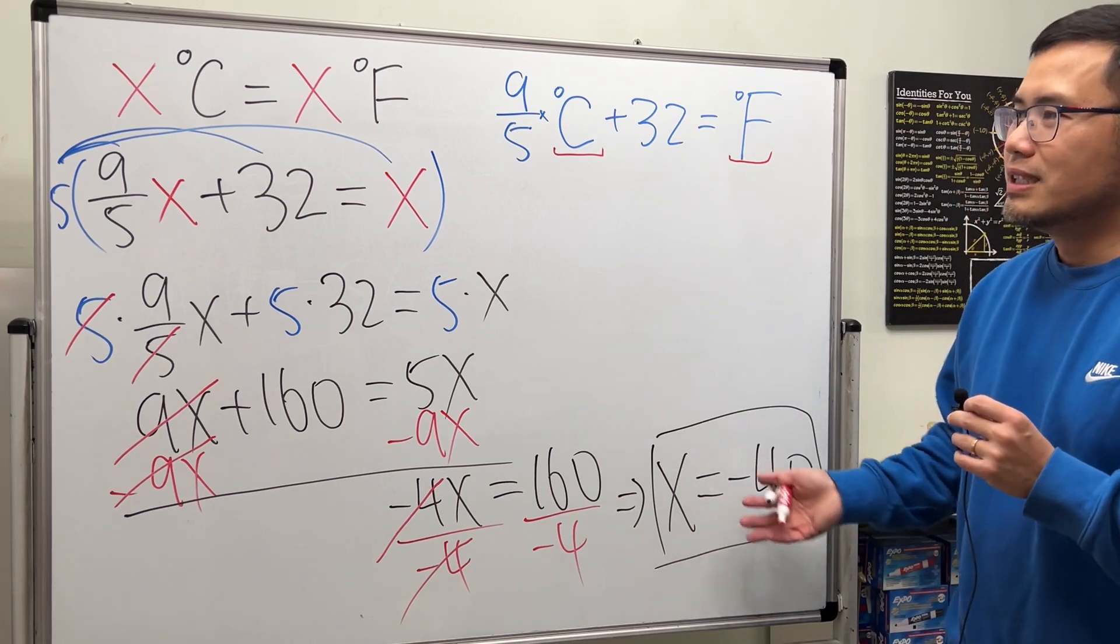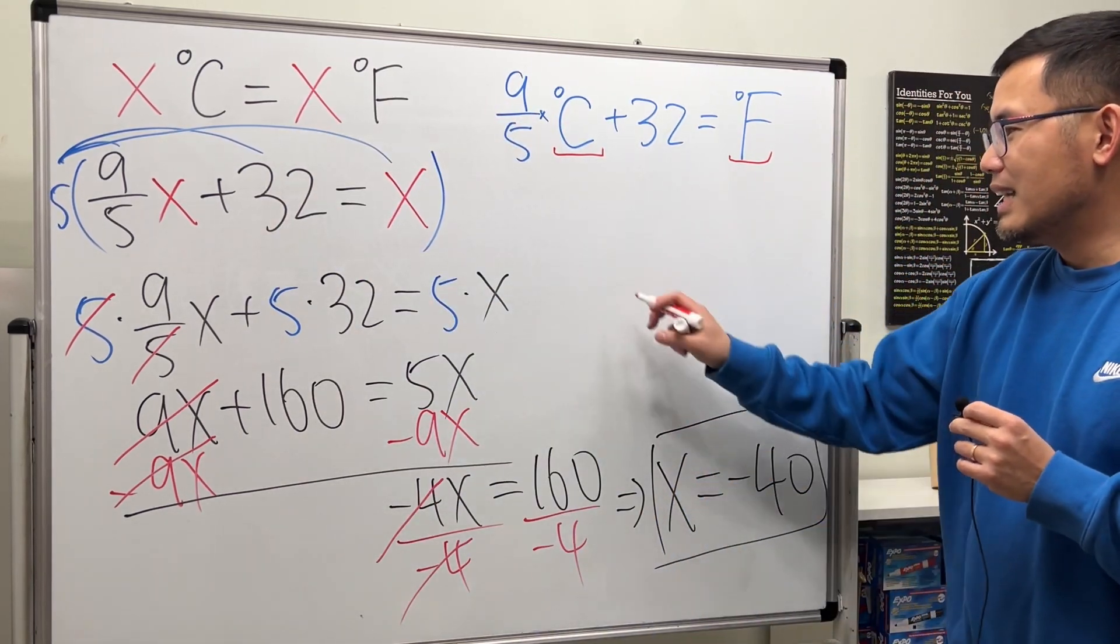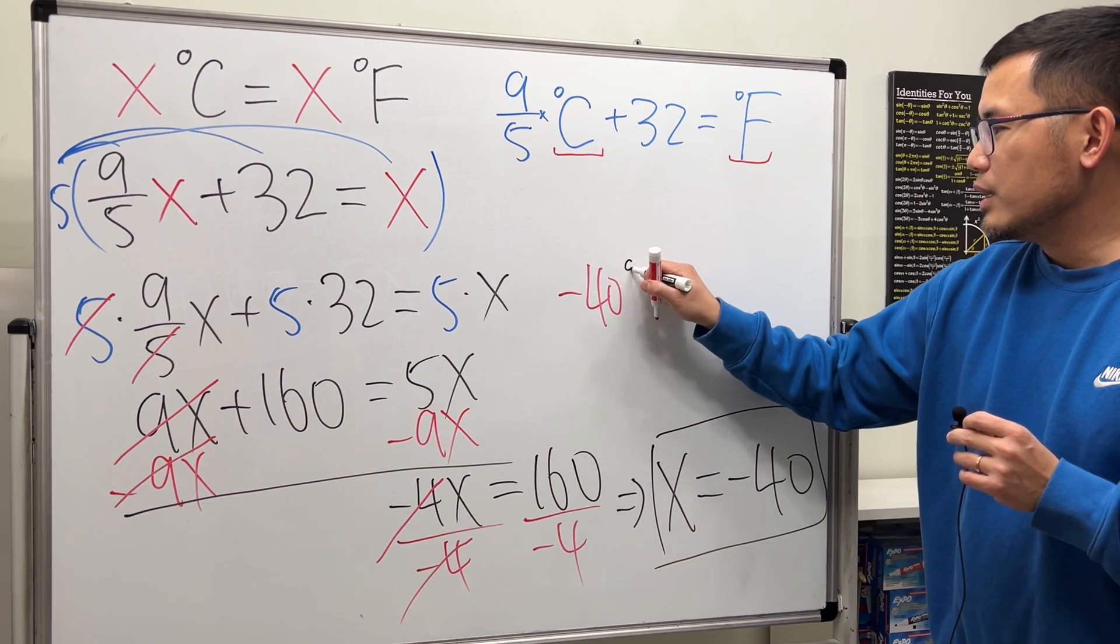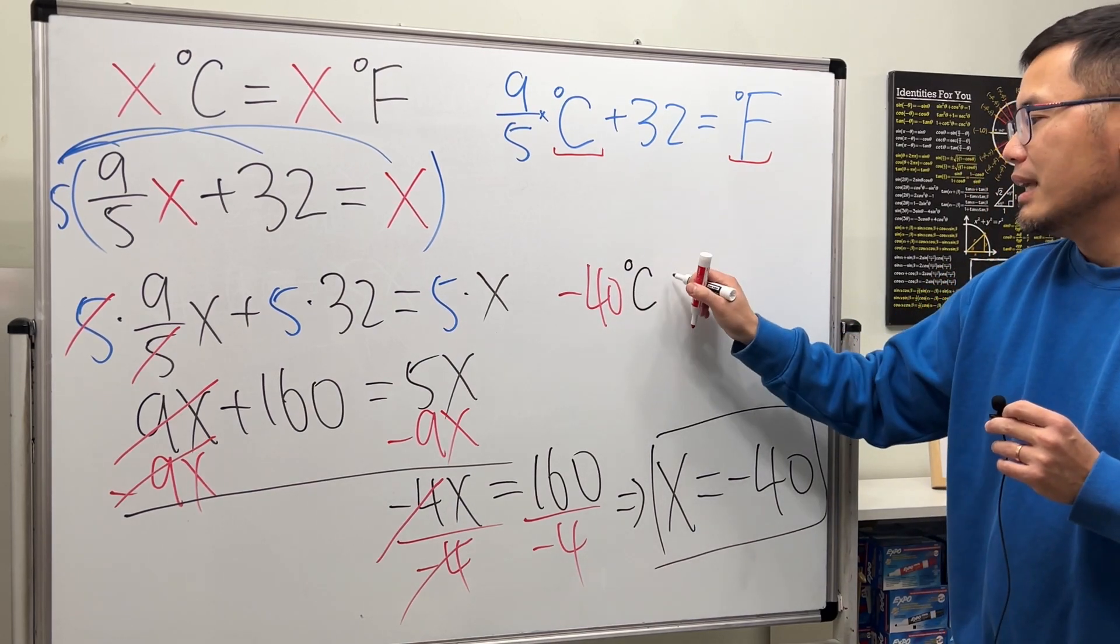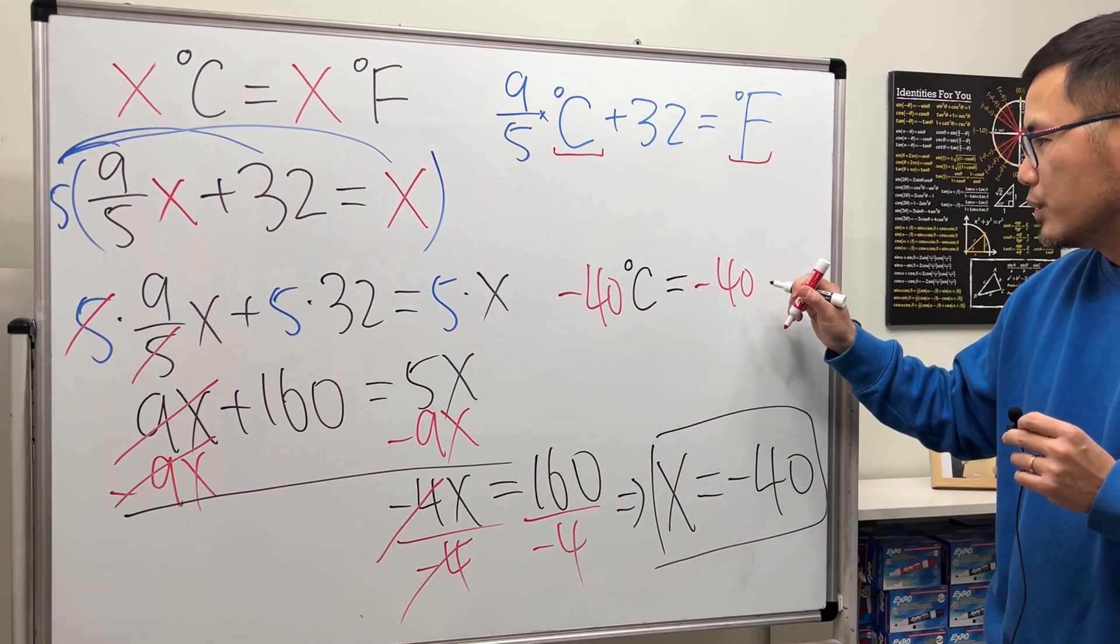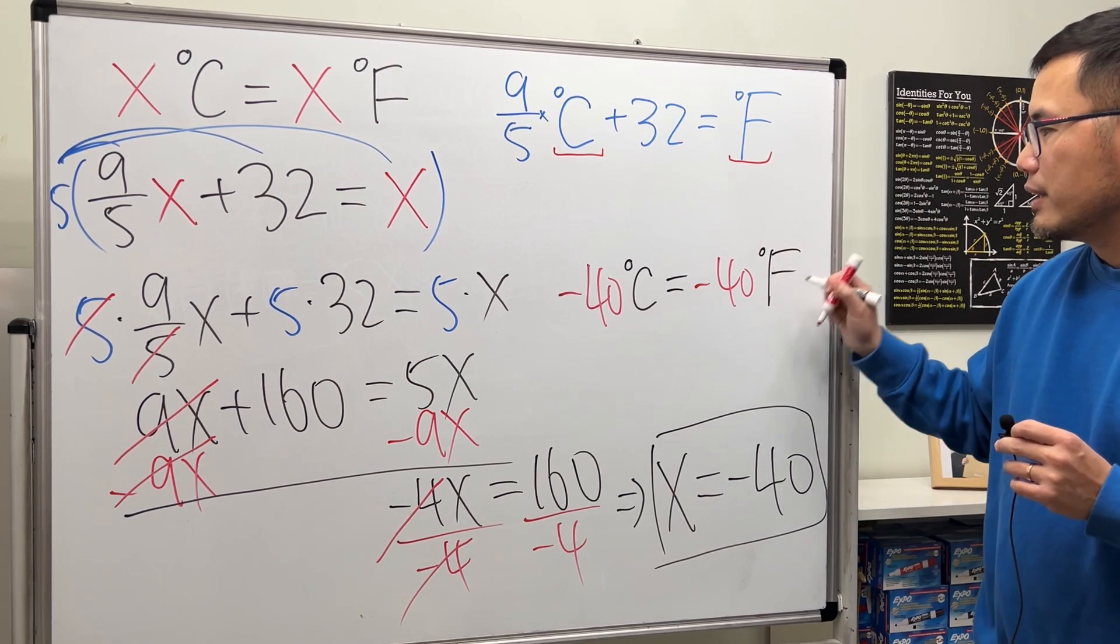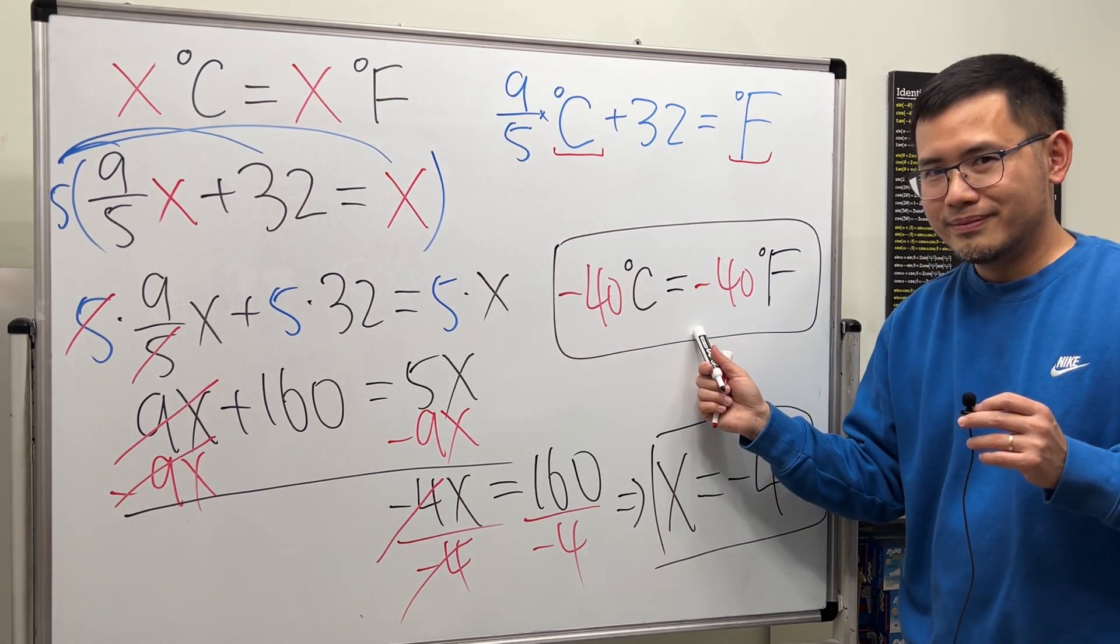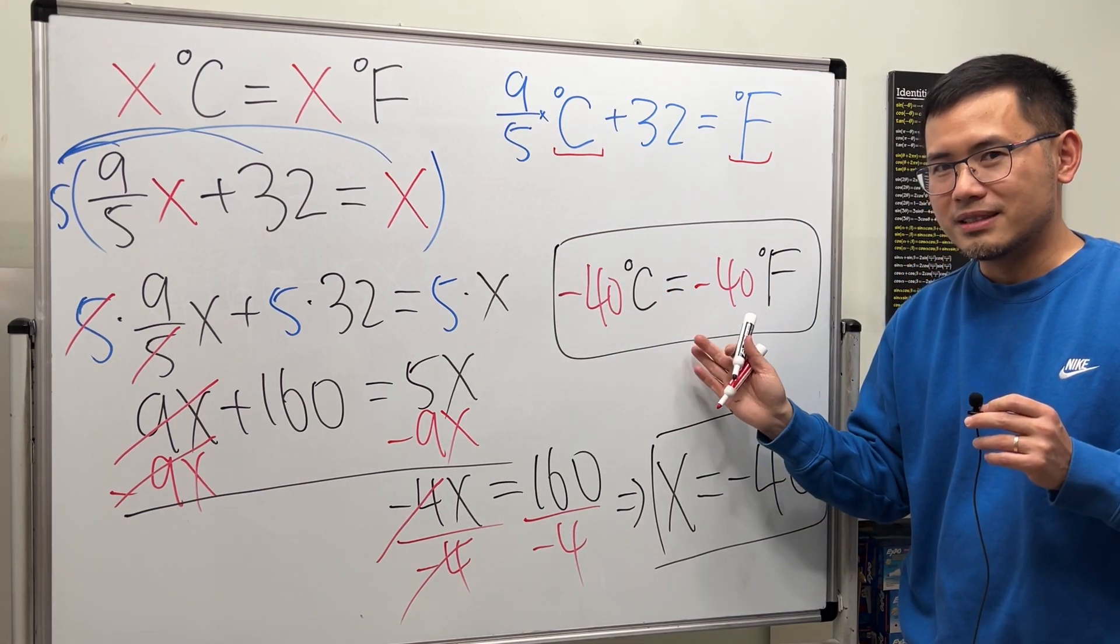And if you want to put this back, you will see that we get negative 40 degrees Celsius equals negative 40 degrees Fahrenheit. Super, super, super cool. This is the only temperature that makes this happen.